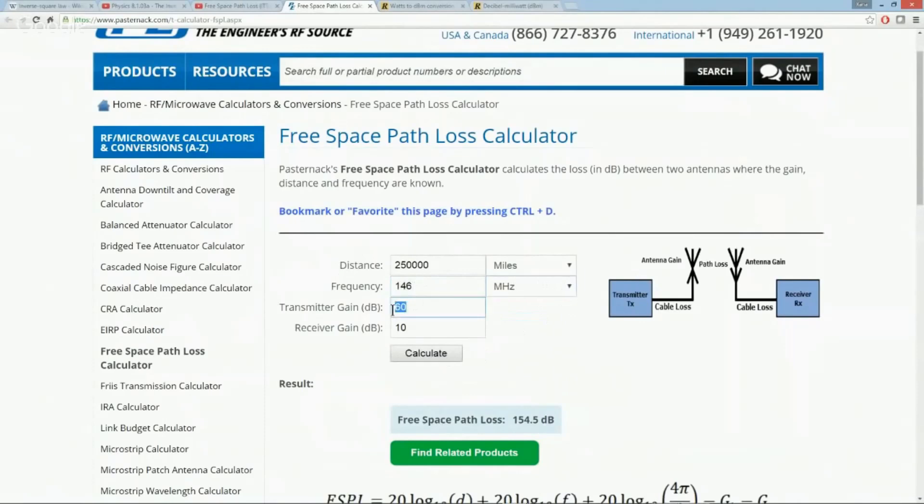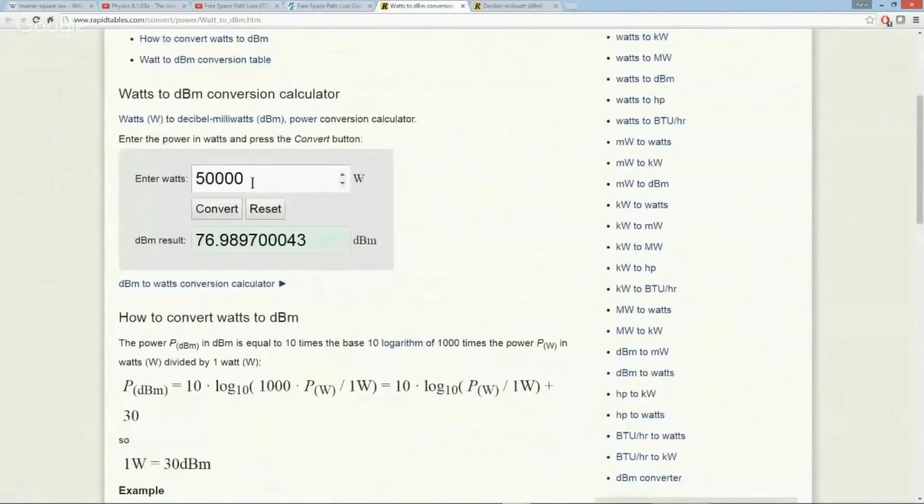Let's do what the amateurs are doing—ham radio amateurs—and let's put in 146 megahertz. Let's say that the transmitter gain is going to be 10 watts. Now hams cannot put any more than 2,000 watts—they are limited to 2,000 watts—and they may be able to get a gain figure of 6 to 9 dB.